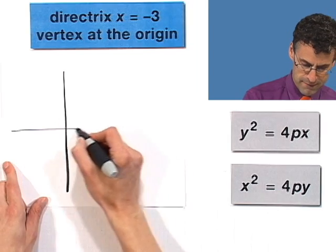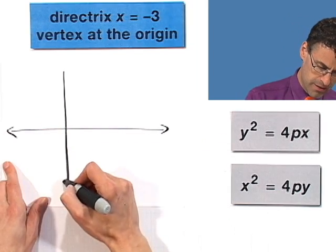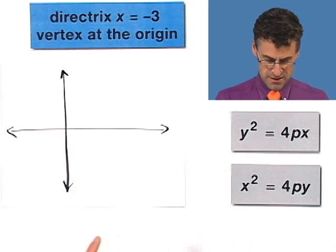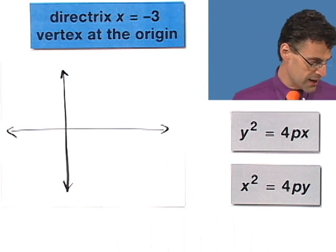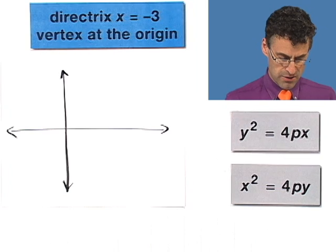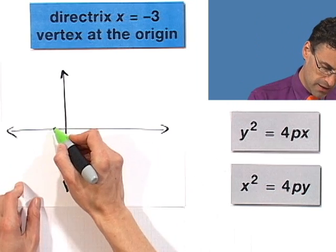Think about it. So here we go. Here are my axes. And the directrix is x equals negative 3. So that's going to be a vertical line. All the values where x equals negative 3.